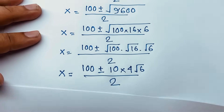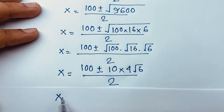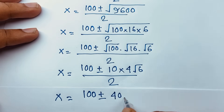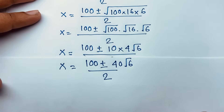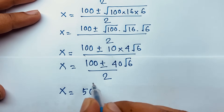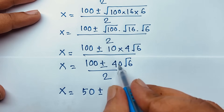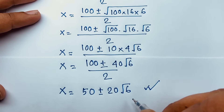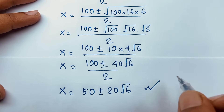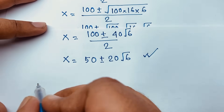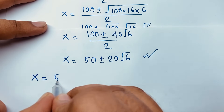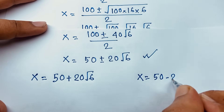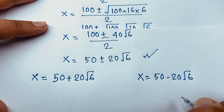So x equals 100 plus or minus 40 square root of 6, all over 2. Dividing through by 2, x equals 50 plus or minus 20 square root of 6. This is the value of x — it is a real number, no complex numbers here. So we find two solutions: x equals 50 plus 20 square root of 6, and x equals 50 minus 20 square root of 6.